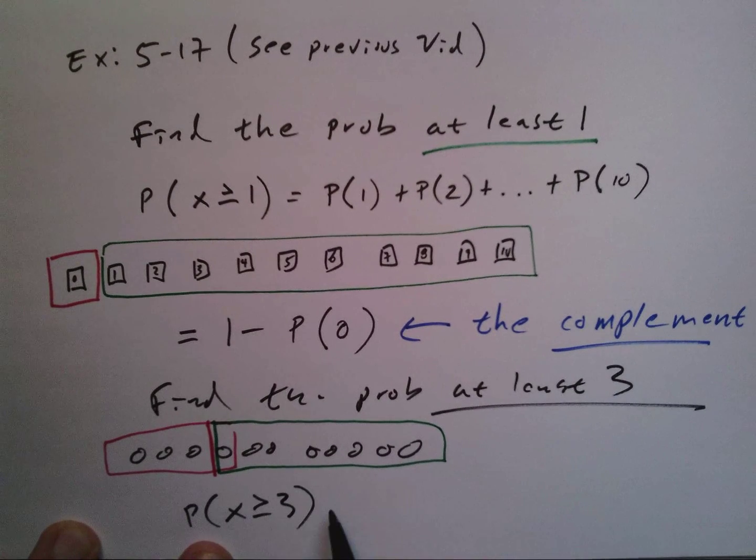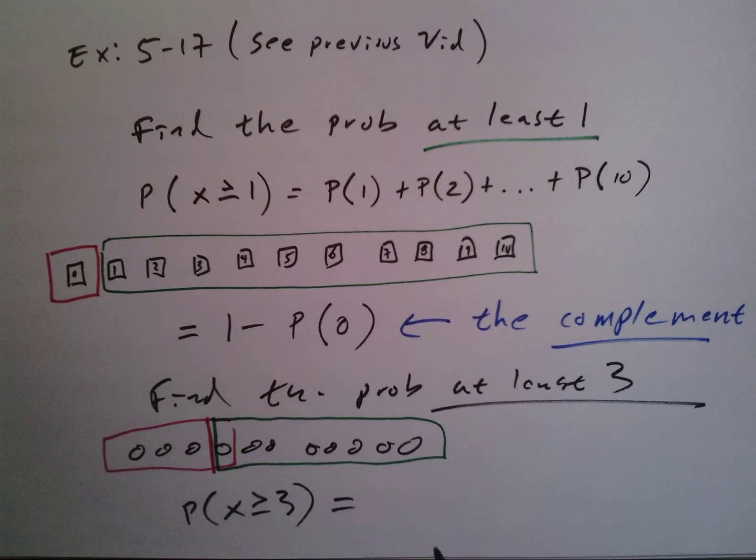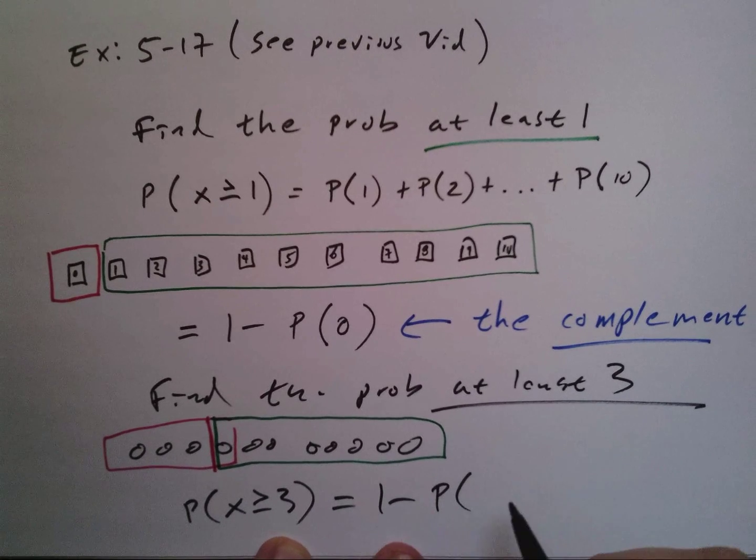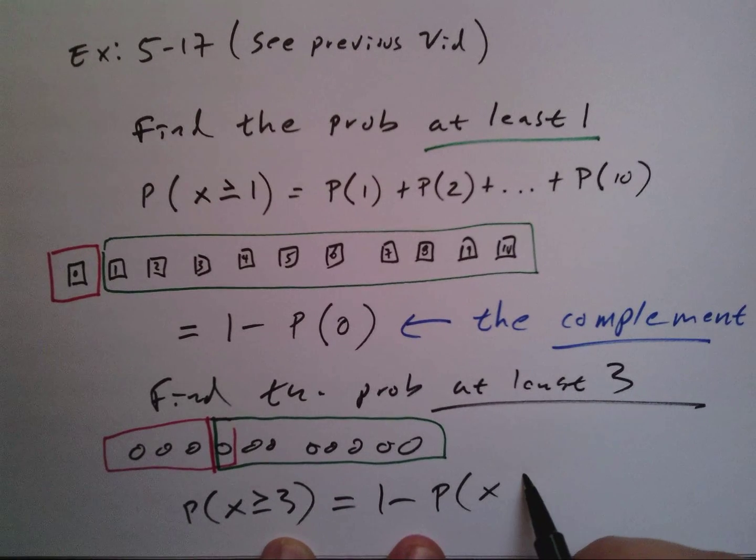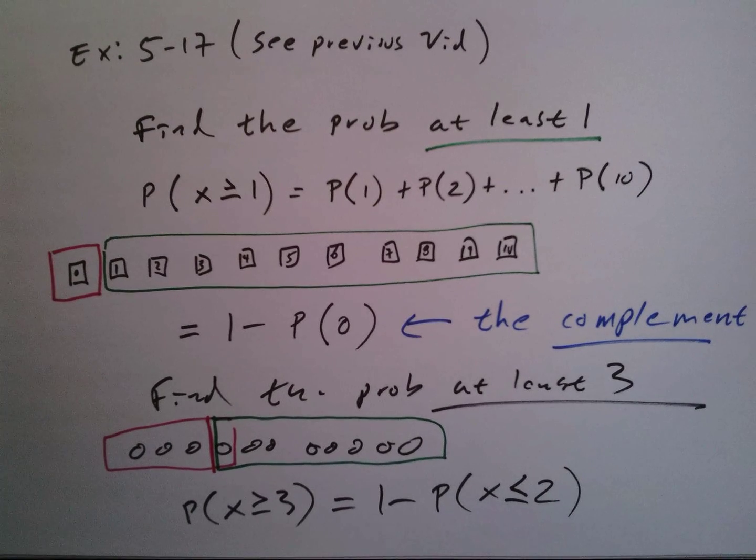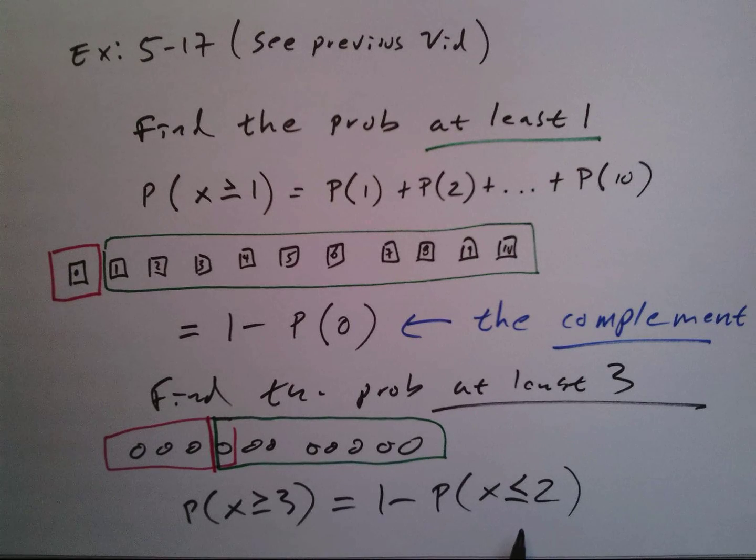So what I can do is, instead of finding the probability that x is greater than or equal to three, I can say that that's equal to one minus the complement that x is less than or equal to two, because that would include zero wins, one win, two wins.